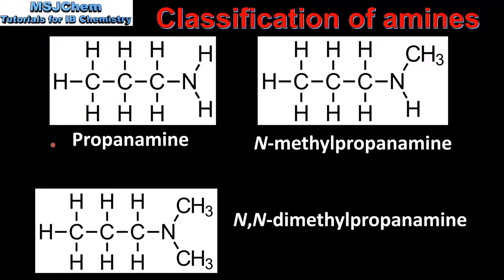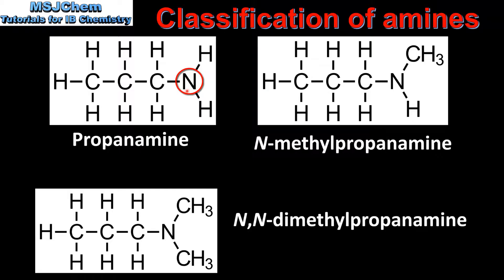To end the video we look at the classification of amines. Here we have the structures of three amines. On the left we have propanamine, on the right we have N-methylpropanamine, and at the bottom we have N,N-dimethylpropanamine. To classify amines we need to look at the number of carbon atoms that are directly bonded to the nitrogen of the amine group.